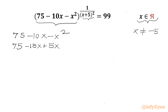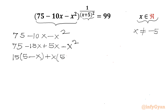The product is minus 75x². Now I will take 15 common from the first two terms, giving (5 minus x), and take x common from the last two terms, also giving (5 minus x). So overall we can factor our quadratic as (5 minus x) times (15 plus x).